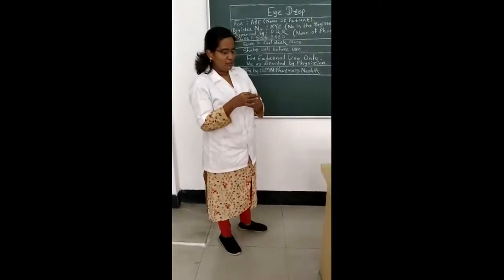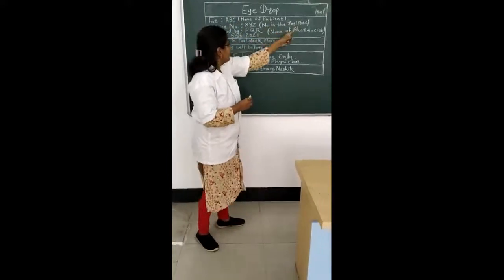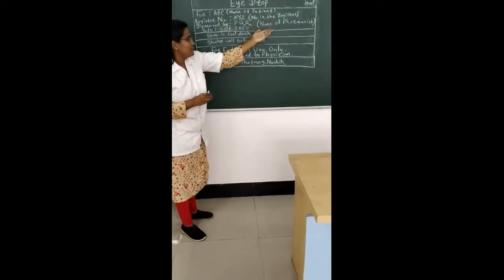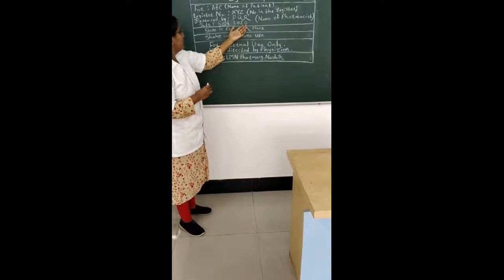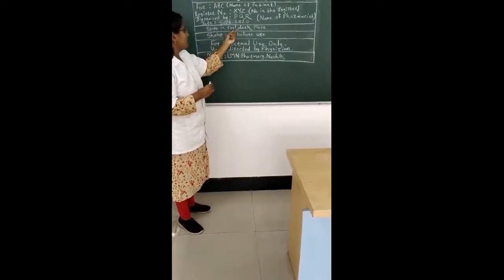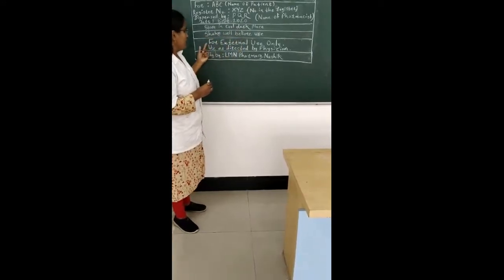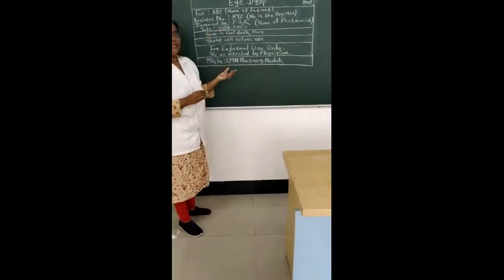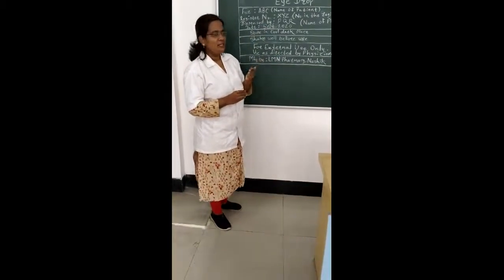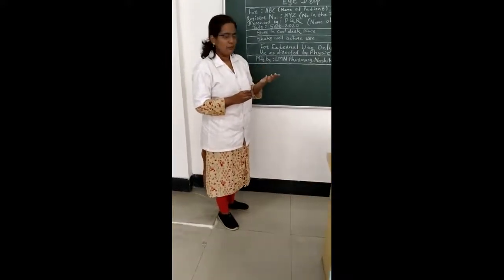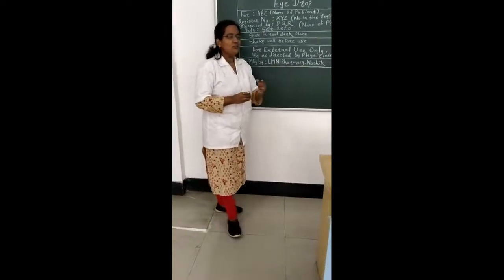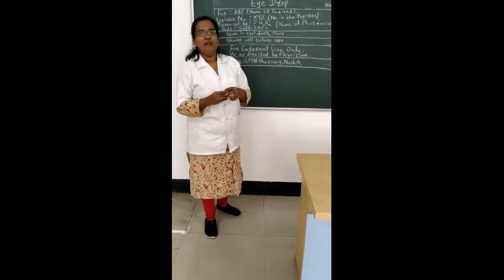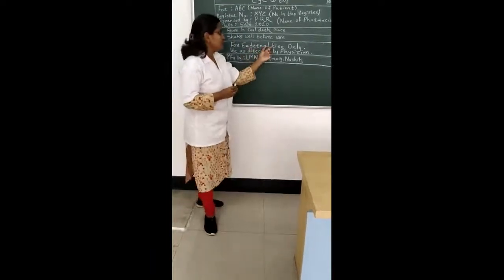Moving towards the labeling part: formulation — eye drop 10 ml. For patient Nemo, register number XYZ, dispensed by PQR pharmacist. Date: September 2020. Storage condition: store in a cool and dark place, shake well before use. Direction: for external use only, use as directed by the physician. Additional directions: the eye drop is to be used within one month after opening the container. If eye irritation persists, the patient should visit a doctor. Manufactured by LA Pharmacy, Nasik. The 10 ml eye drop is submitted in an amber-colored proper container for inspection, with special instruction on the label: for external use only.